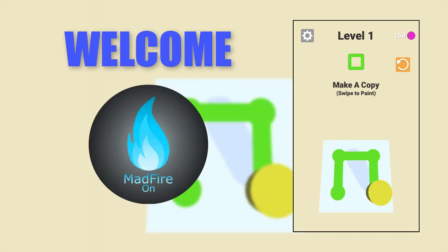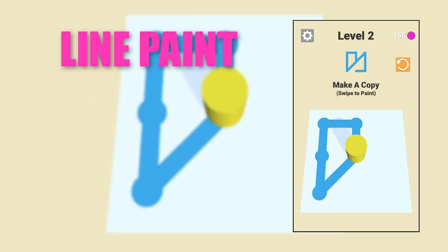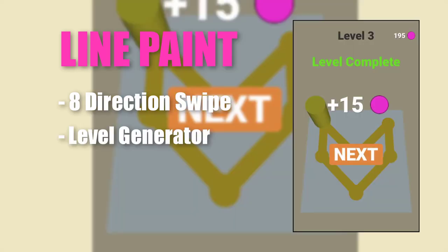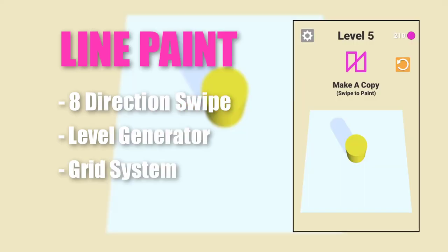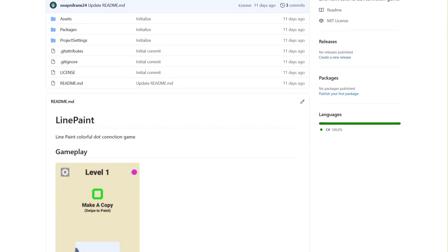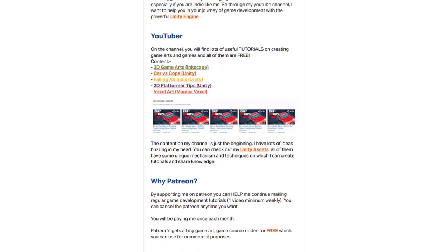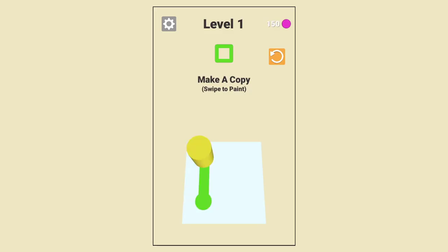Hello guys and welcome back to the channel. In this tutorial series we are going to create a simple puzzle game. We are going to cover eight-direction swipe control to move our player, level generation from level data, grid system, and many more things. The entire project is available on GitHub — the link will be in the description. If you want the premium version with extra features like Unity ads, a level editor, and 100+ ready-to-go levels, you can visit my Patreon page. Let's get started.